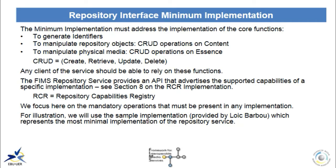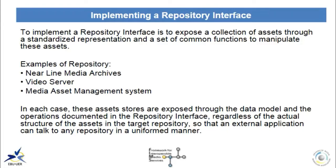The repository service includes many operations and mechanisms and they are not all mandatory. A compliant implementation may choose to ignore certain capabilities, especially if they make no sense for the repository to expose. The FIMS service provides an API that advertises the supported capabilities of a specific implementation — this is the RCR, the Repository Capabilities Registry. It's meta information about the repository service. We focus here on the mandatory operations. For illustration, we will use the sample implementation written by Loic Barbu, which provides a minimal implementation of a repository service.